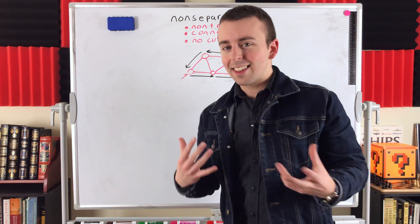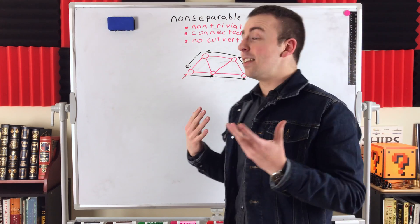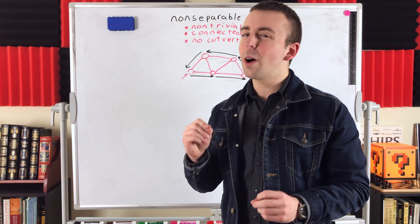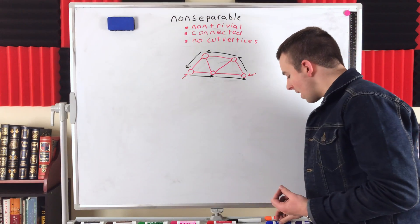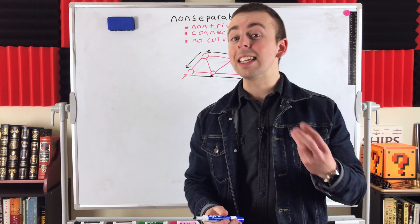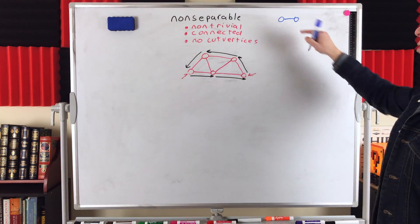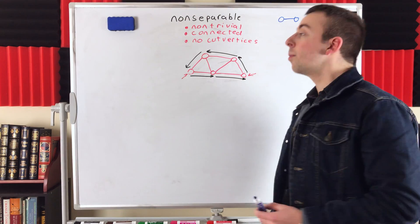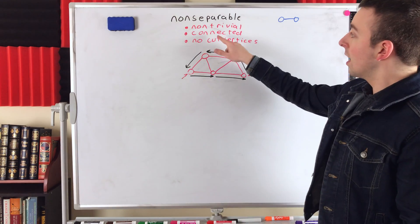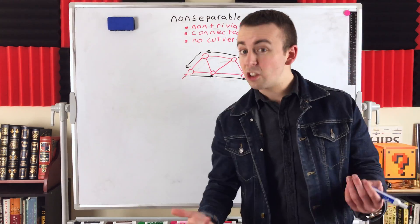You might be thinking: is that the key characterization of non-separable graphs? That a non-trivial connected graph is non-separable if and only if every two vertices lie on a common cycle? Almost, but not quite. The stipulation we have to make is that the graph has at least three vertices, because there's one special non-separable graph: the complete graph on two vertices, K2. Those two vertices don't lie on a common cycle, yet this is a non-separable graph. It's non-trivial, connected, and has no cut vertices — deleting either vertex just gives the trivial graph, which is connected.